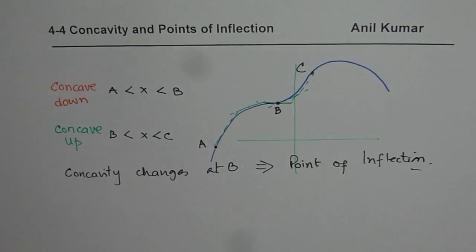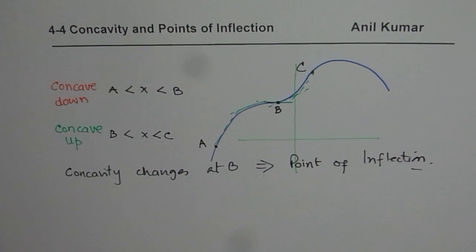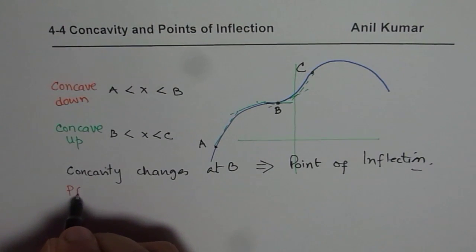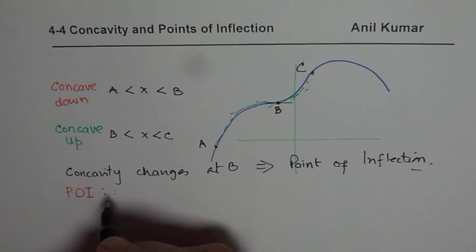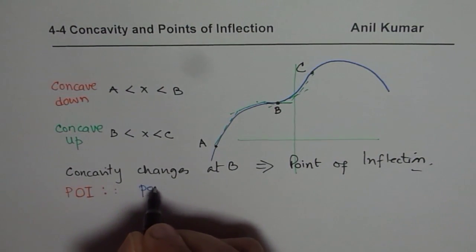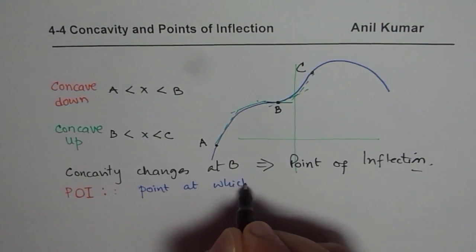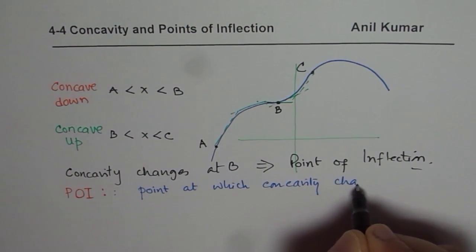So a point of inflection is a point where the concavity changes. To summarize: a point of inflection is a point at which the concavity changes from concave down to concave up, or vice versa.